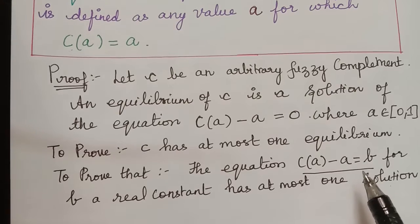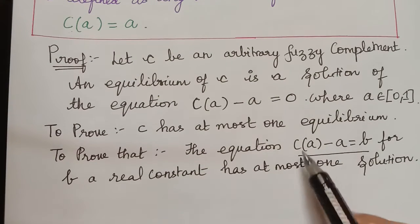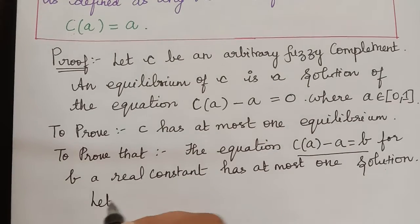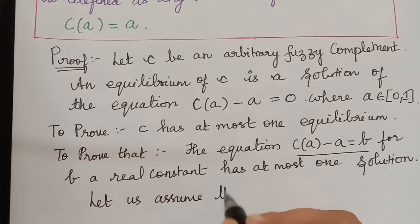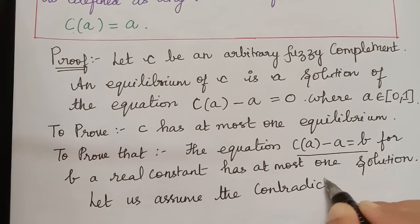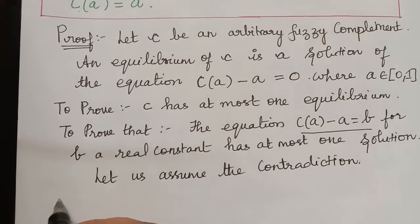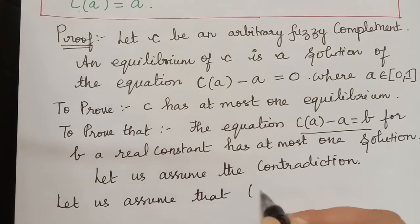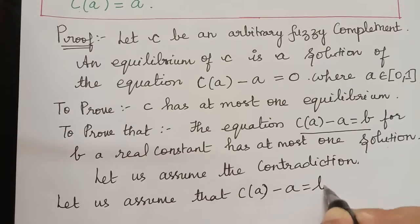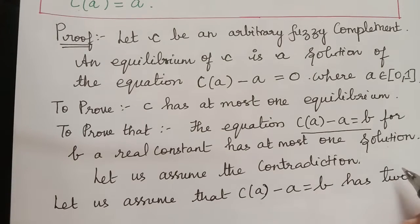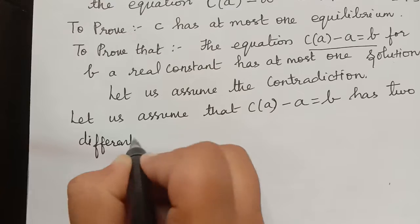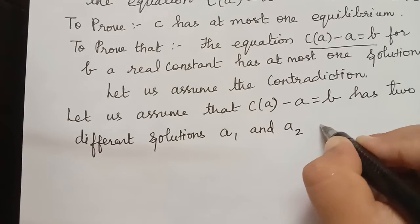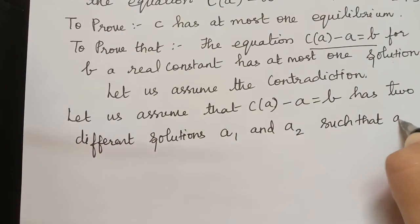We are going to prove this by the method of contradiction. We are going to assume that this equation has two solutions and prove that it is a contradiction. So let us assume the contradiction: C of A minus A equal to B has two different solutions, say A1 and A2, such that A1 is lesser than A2.